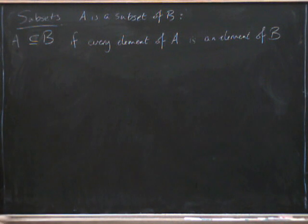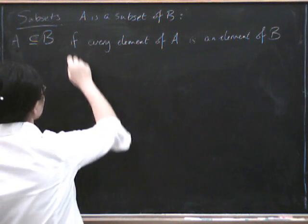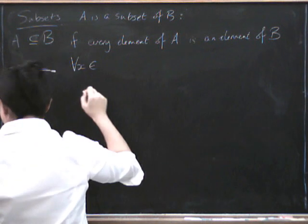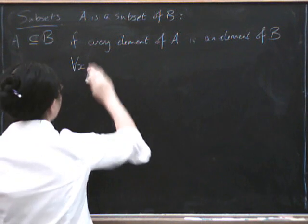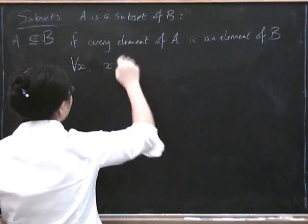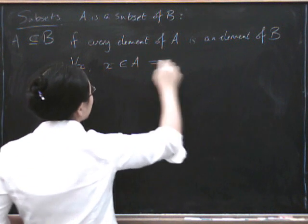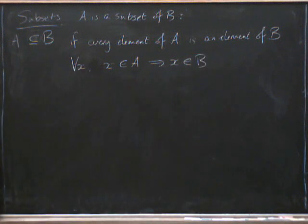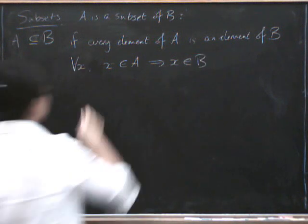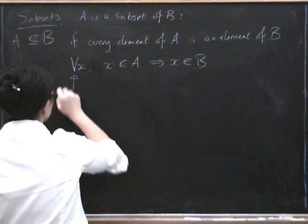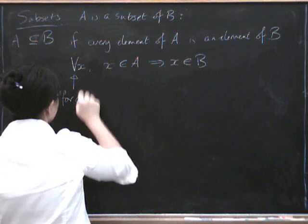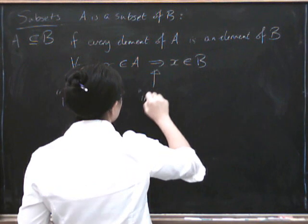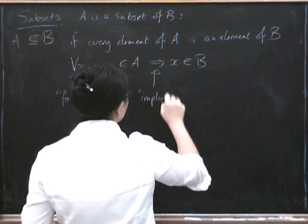There's a way of writing that more formally, which is like this. For all x in A, or for all x, we can say if x in A implies x in B. So, what does that notation mean? This here means for all, and this means implies.